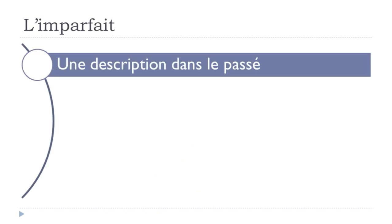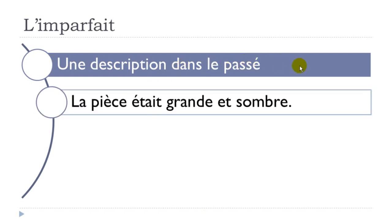The first situation when we use l'imparfait is when you want to describe something in the past — une description dans le passé. For example: 'la pièce' (the room) 'était' — that's the verb 'to be' in imparfait form — 'grande' (big) 'et sombre' (dark). So if you want to describe something in the past, use l'imparfait.